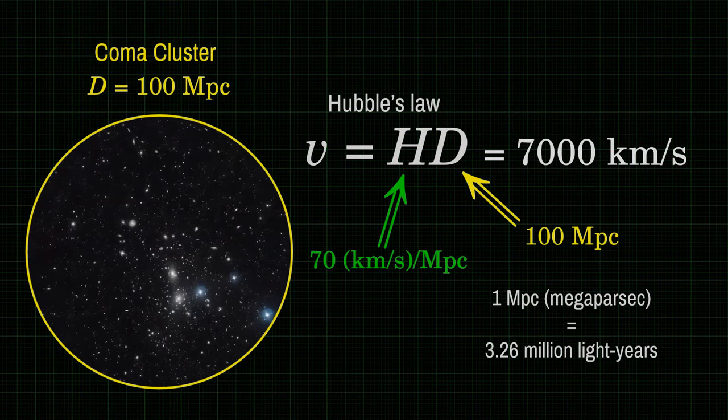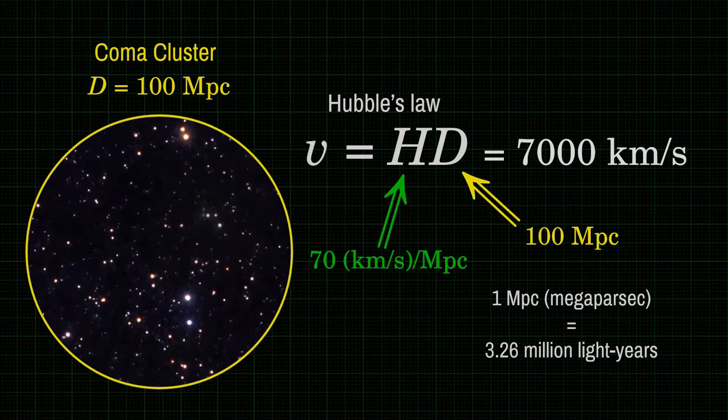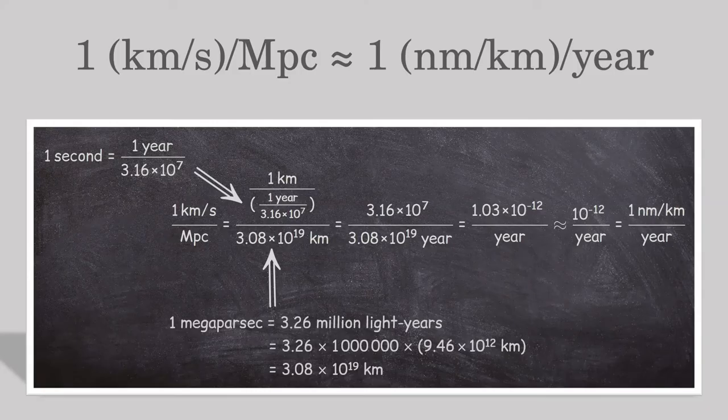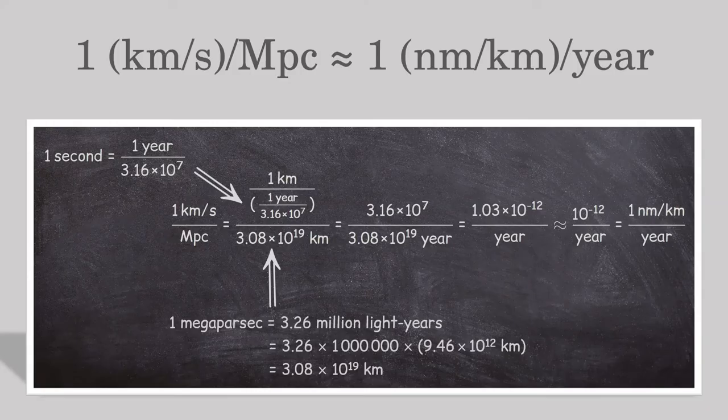1 megaparsec is 3.26 million light-years. To bring this into perspective at our human scale, we can use the fact that 1 km per second per megaparsec is almost equal to 1 nm per km per year.